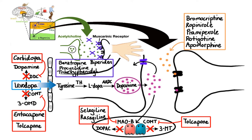Before we move on, one more drug used in the treatment of Parkinson's disease is amantadine. Amantadine does not fit exactly into any of the classes discussed so far; its mechanism of action is poorly understood. However, some of the speculated mechanisms are that it prevents dopamine reuptake, facilitates presynaptic dopamine release, and blocks glutamate and NMDA receptors.